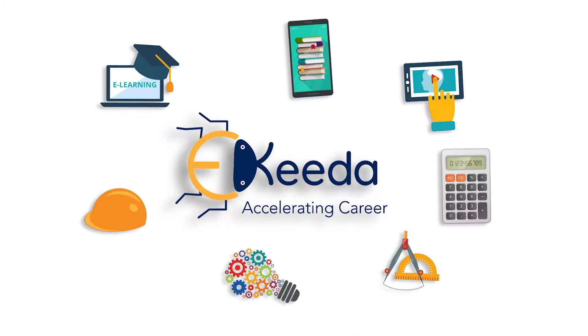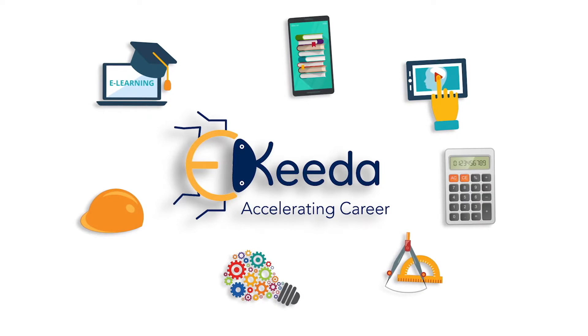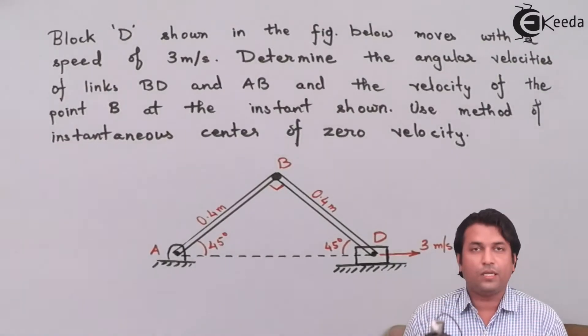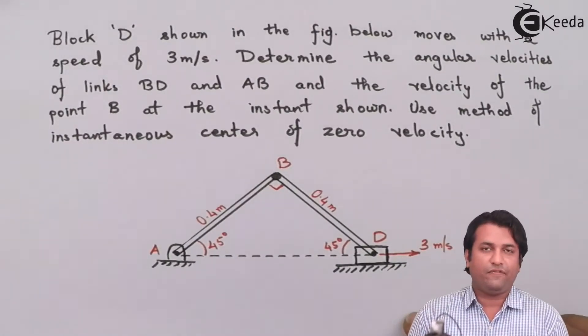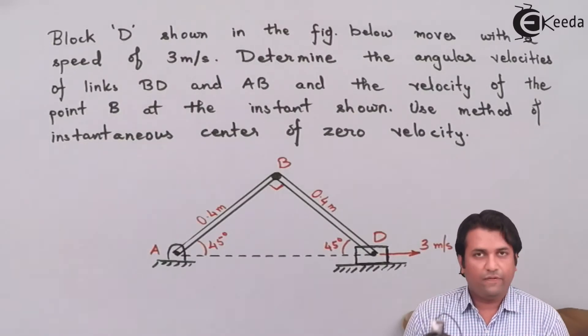Hello students. In the previous video we have seen what is kinematics of rigid bodies and ICR, that is instantaneous center of rotation. Now we will take the next example wherein we'll see how to find ICR, angular velocities.